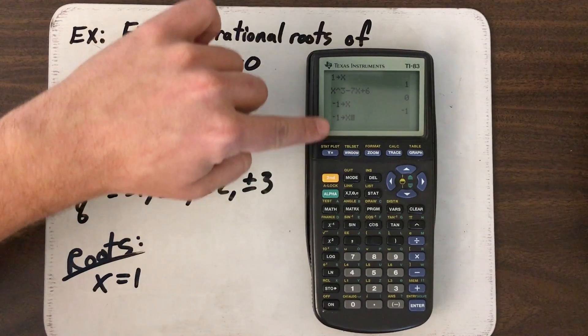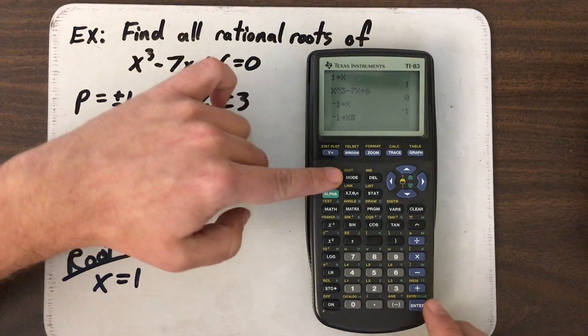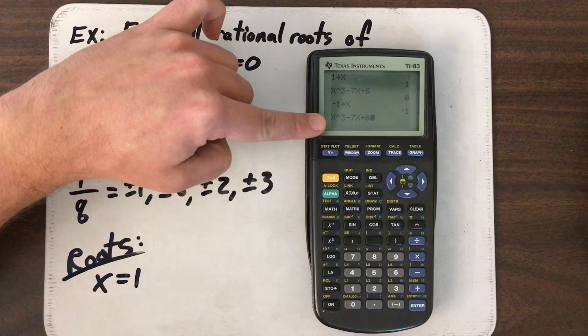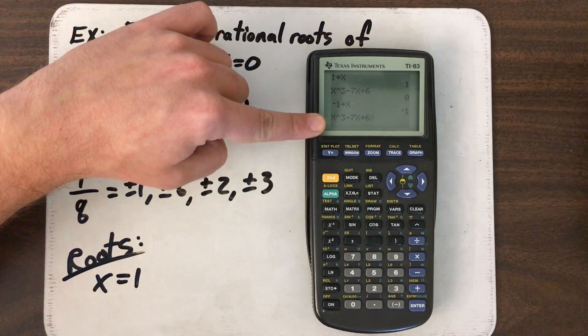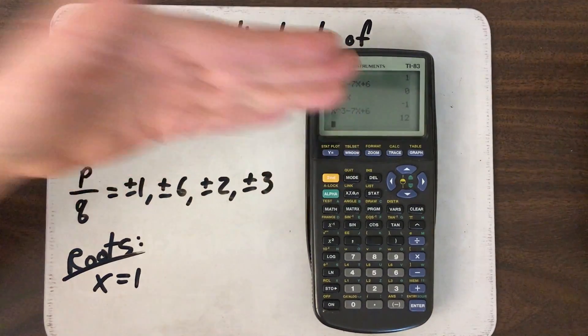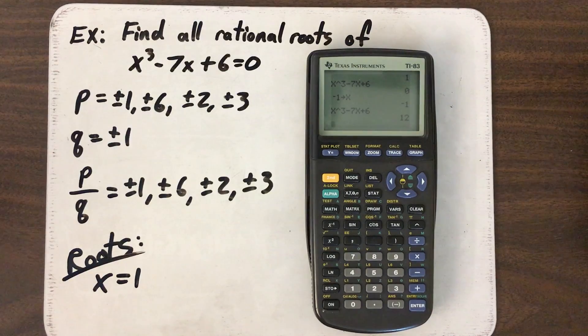That pulls up what I typed last. Second, enter again. Boom. There's my expression I want to evaluate. So I hit enter. 12. Hmm. I guess negative 1 is not a possible root.